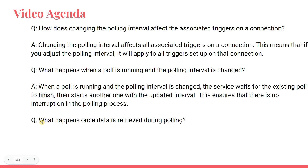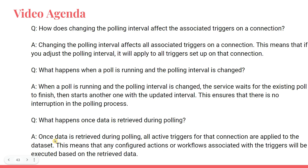What happens once data is retrieved during polling? Once data is retrieved during polling, all active triggers for that connection are applied to that data set. This means that only the configured actions or workflows associated with the triggers will be executed based on the retrieved data. So if somebody is changing a file, the trigger for file change will start. If somebody has deleted something, the trigger for that deletion activity event will start. Based on your data set, the specific trigger will start.